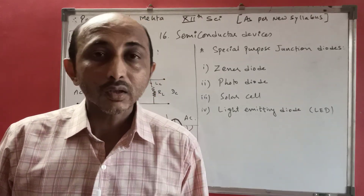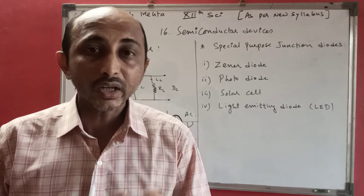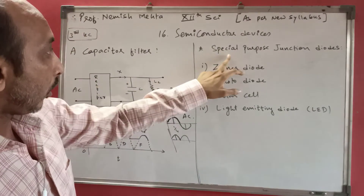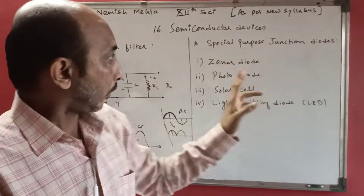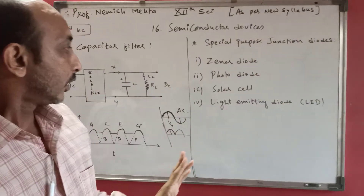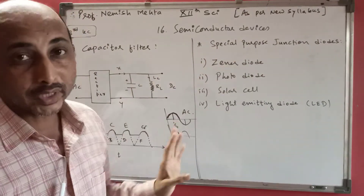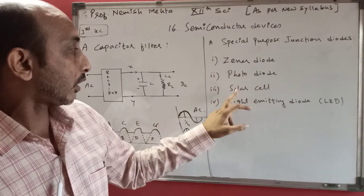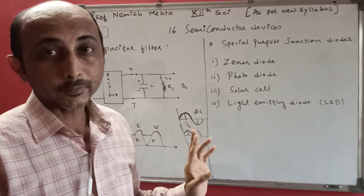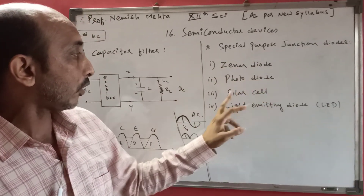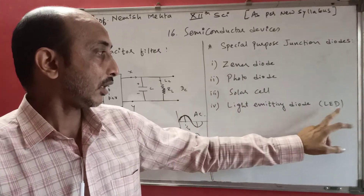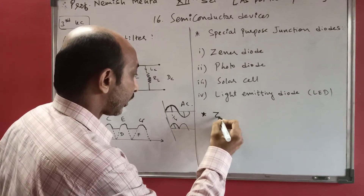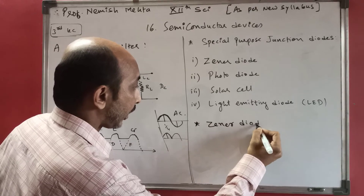Zener diode as a voltage regulator - but first, let us understand what a Zener diode is. We will look at some special purpose junction diodes. There are four types: first is Zener diode, second is photo diode, third is solar cell, and fourth is Light Emitting Diode (LED).